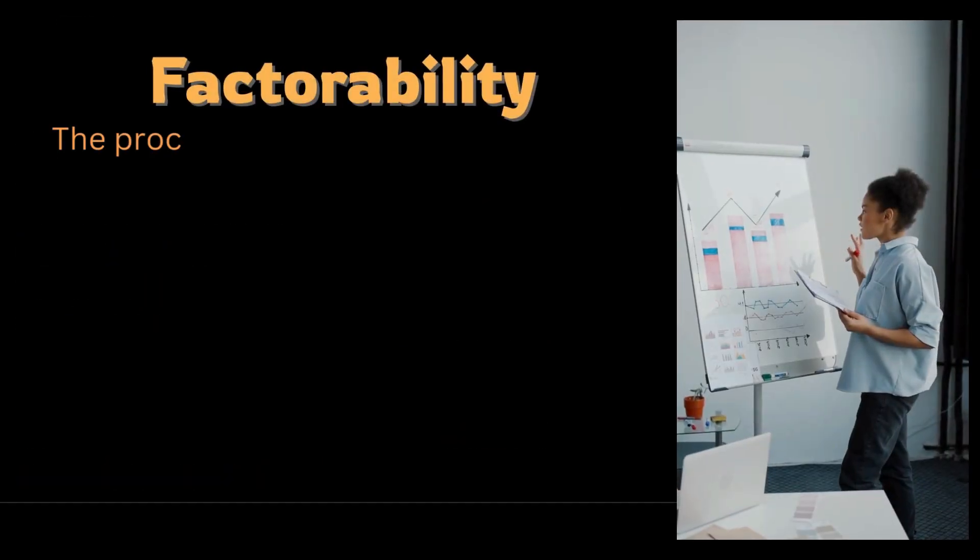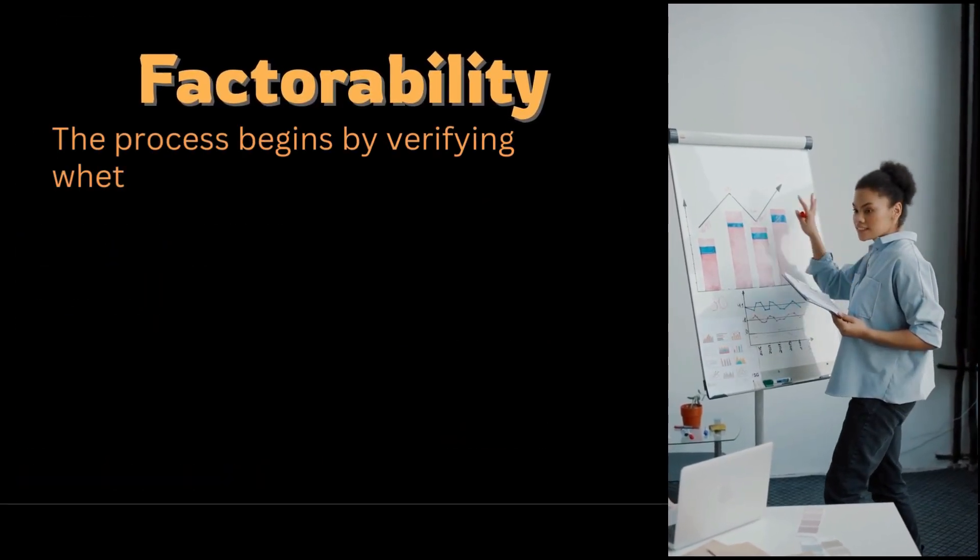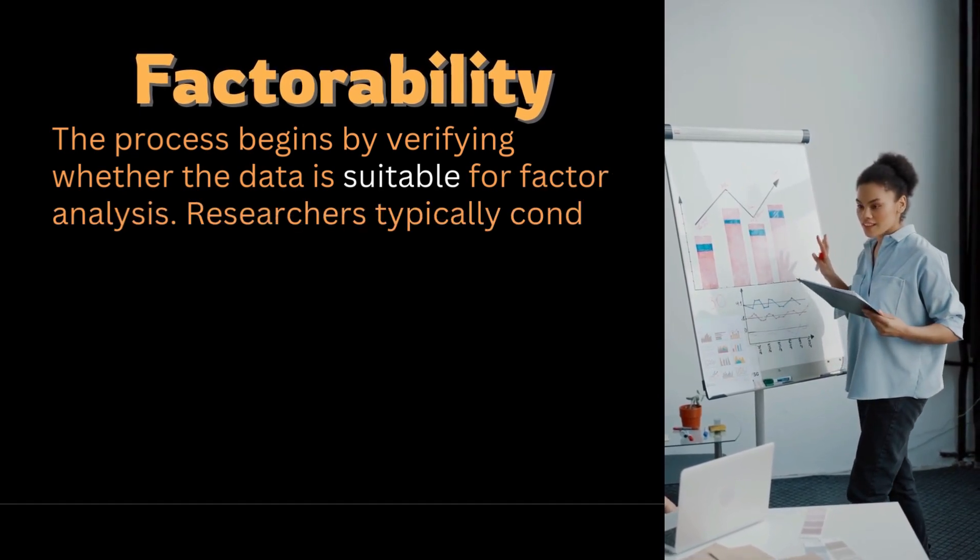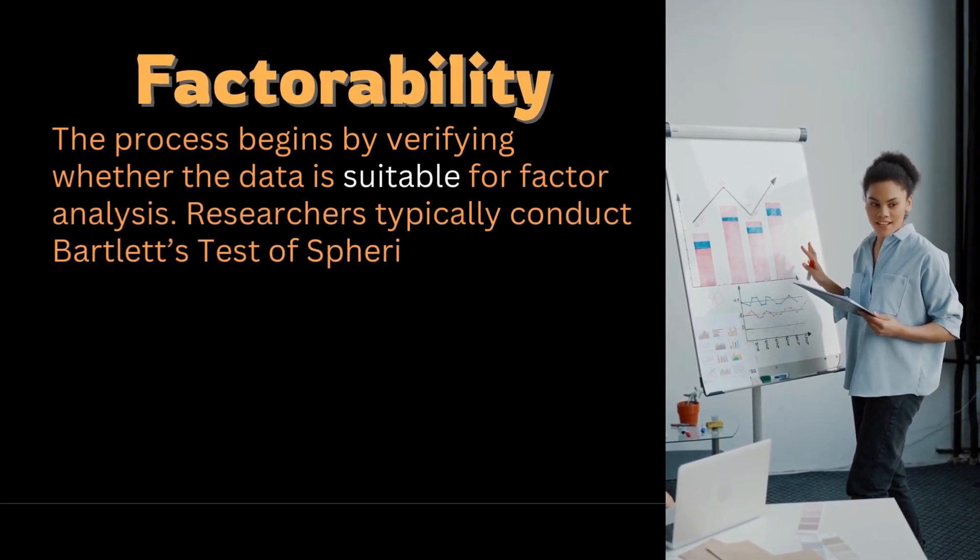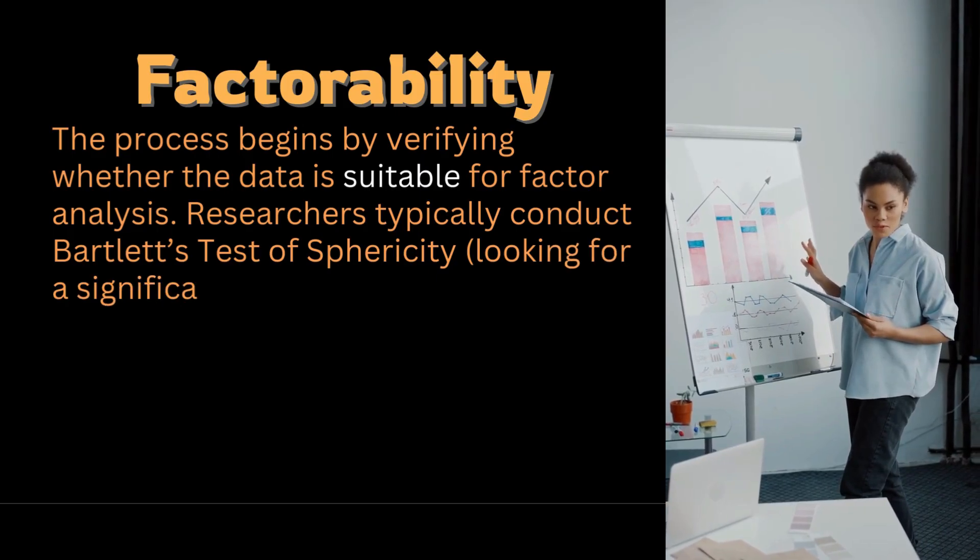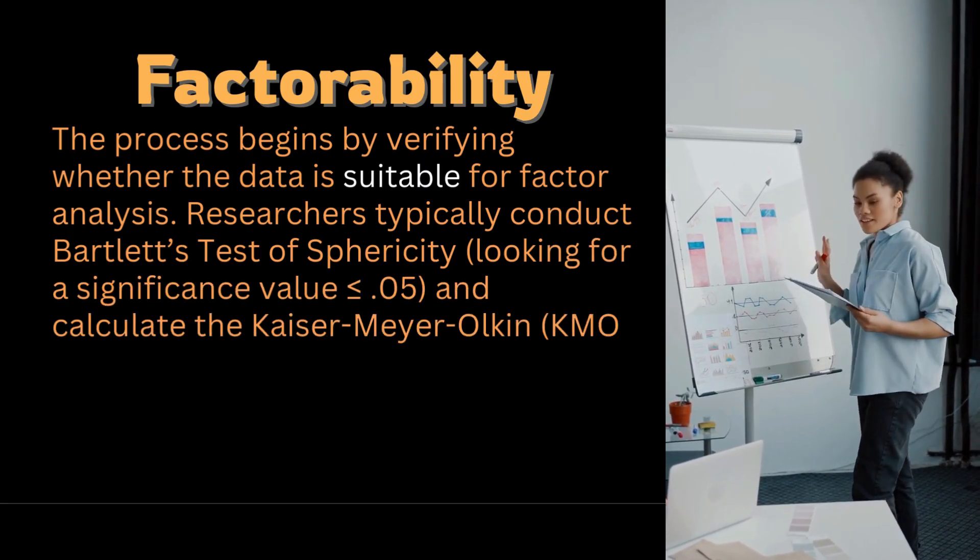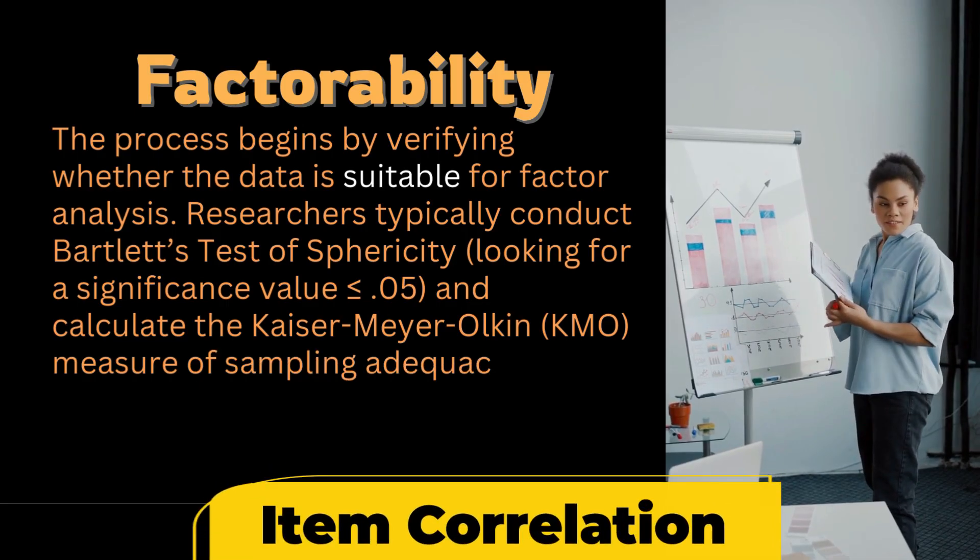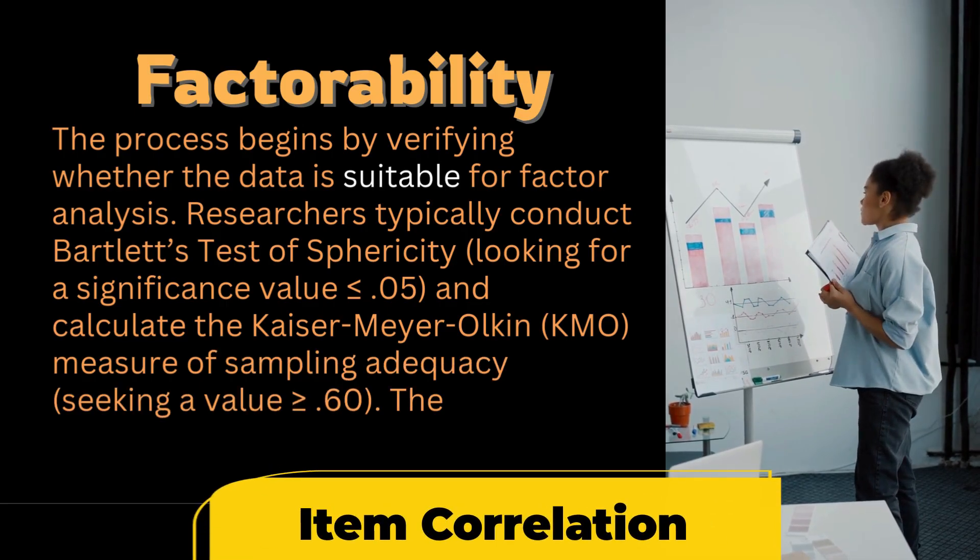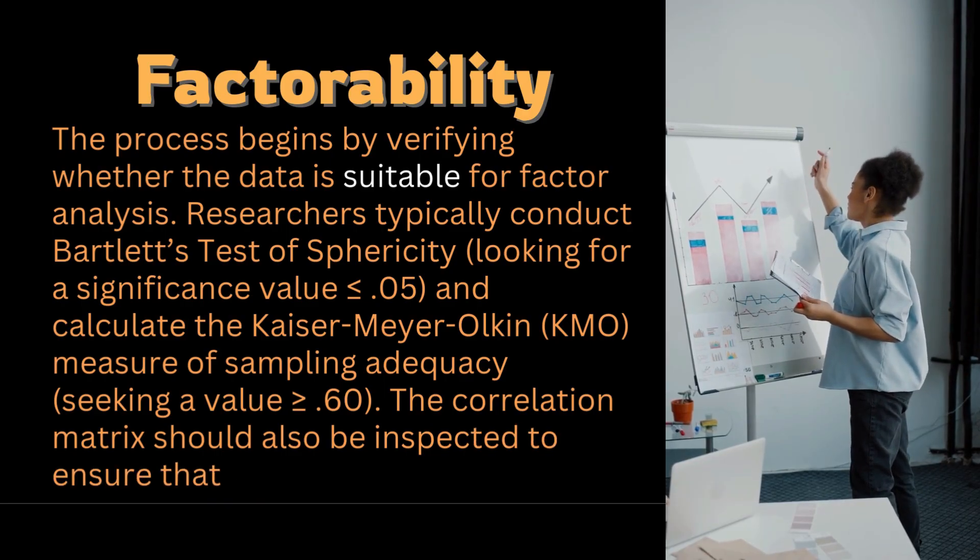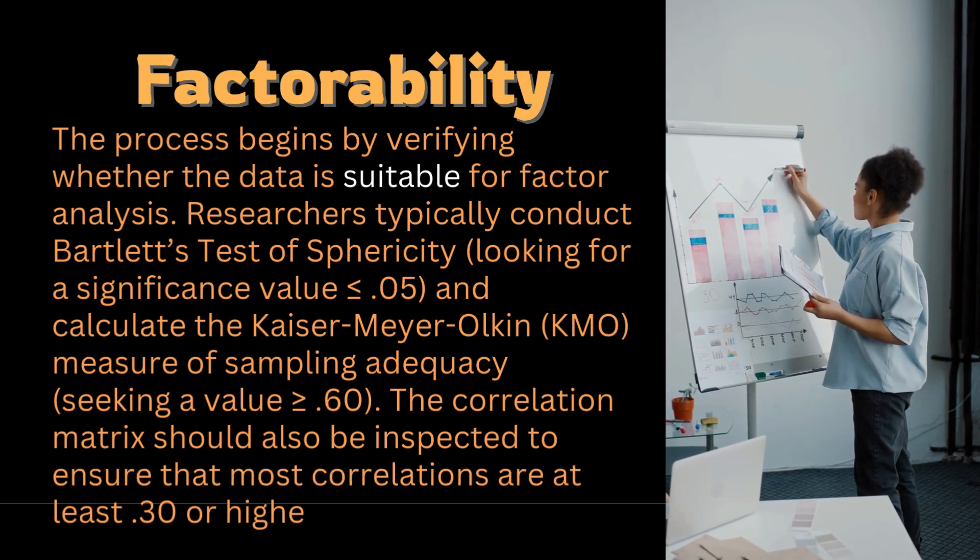The process begins by verifying whether the data is suitable for factor analysis. Researchers typically conduct Bartlett's test of sphericity and they look for a significance value less than or equal to 0.05 and calculate the Kaiser-Meyer-Olkin measure of sampling adequacy, seeking a value of more than 0.6. The correlation matrix should also be inspected to ensure that most correlations are at least 0.3 or higher.